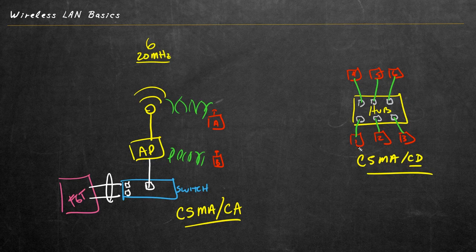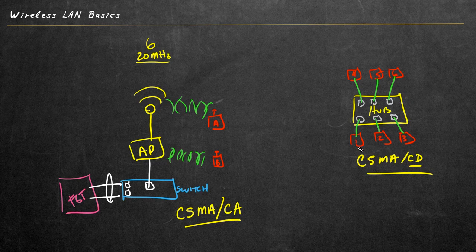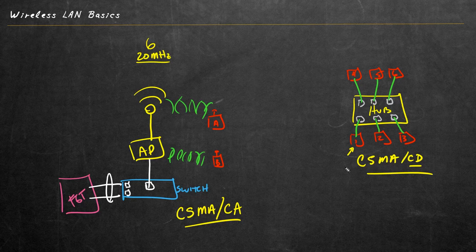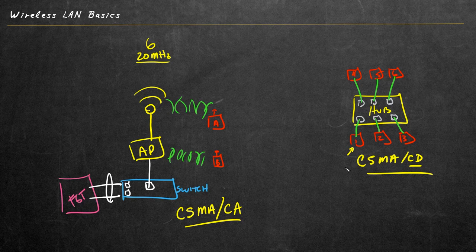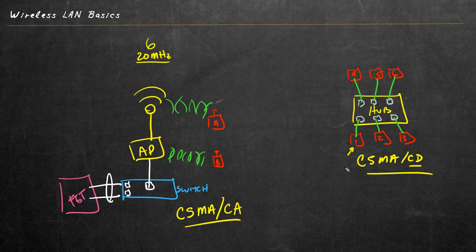With carrier sensing multiple access with collision detection, it's sort of like device one walking up to the edge of a busy street, waiting for it to be clear or what he thinks is clear, runs out, boom, gets hit, stumbles back to the curb and says, whoa, collision. I got to try that one again. So it has a short timeout and then it looks again to see if it's clear. When it thinks it's clear, it goes again. And if we have two devices that try to send at the same time, there's going to be that collision.